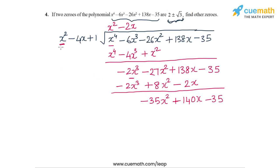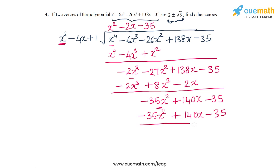Finally, in the last step, we use the multiplier minus 35, which generates the terms that exactly match the current dividend. So the remainder is 0 and the division process terminates, which means the quotient we obtained is the polynomial R(x).